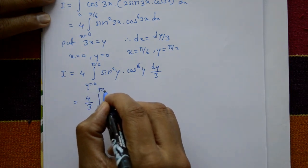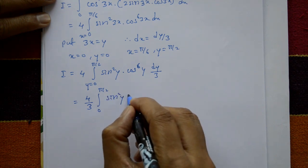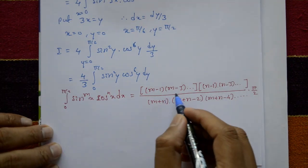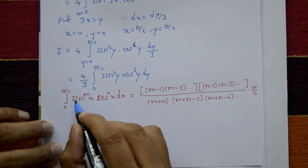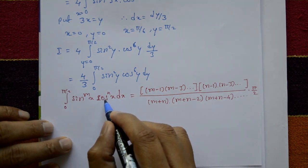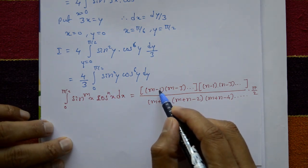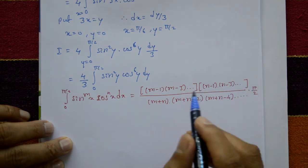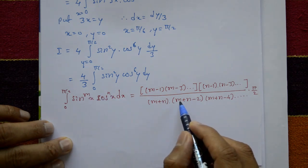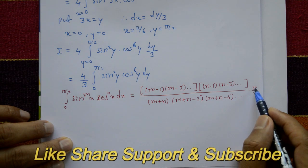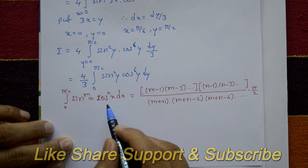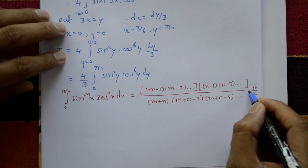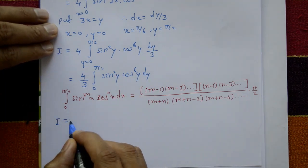The reduction formula: ∫₀^(π/2) sinᵐ(x)·cosⁿ(x) dx = [(m−1)(m−3)(m−5)···] · [(n−1)(n−3)(n−5)···] / [(m+n)(m+n−2)(m+n−4)···] · (π/2), where π/2 is included when both m and n are even. If either is odd, multiply by 1 instead.